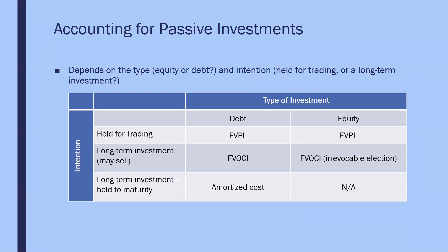If, on the other hand, it were a debt investment — a purchase of bonds issued by another company — and the intention behind making the investment was to hold it to maturity as a long-term investment, then ideally we should be using amortized cost as the accounting model. Amortized cost is not available for equity because there is no maturity date for common shares or preferred shares. In the middle, a company may intend to make a long-term investment but is not averse to selling it should the need arise or should it be profitable. In that case, for an investment in bonds, it's recommended that the company choose fair value through other comprehensive income — fair value through OCI — as the accounting model.